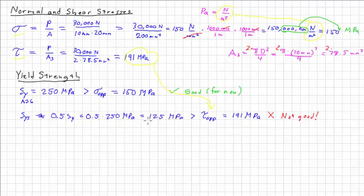And guess what? This is not good. So based just on yield strength, A36 steel might be okay for the clevis, but not for the pin because the pin is undergoing shear stress of 191 megapascals and the yield strength is only 125 megapascals. So we are going to exceed what this can take for the pin. So what do we do? Probably best to change the material at this point.